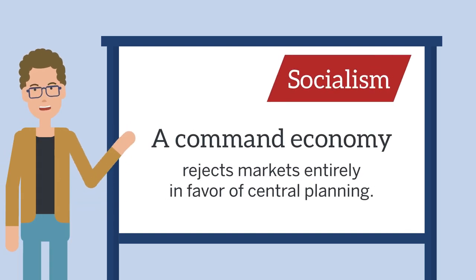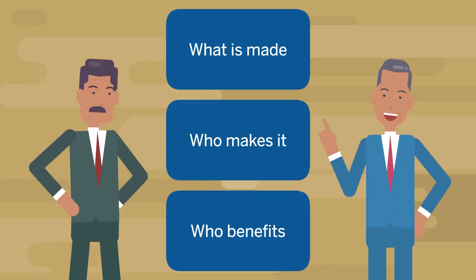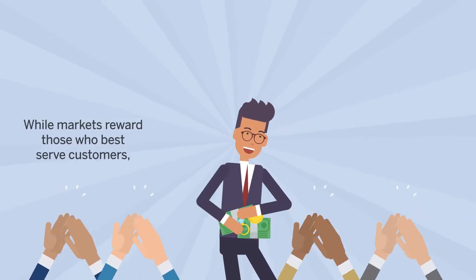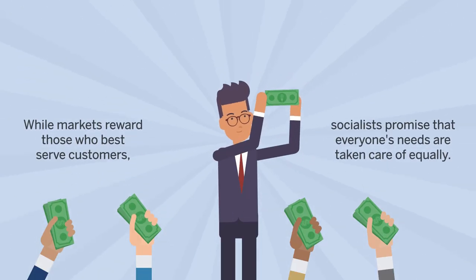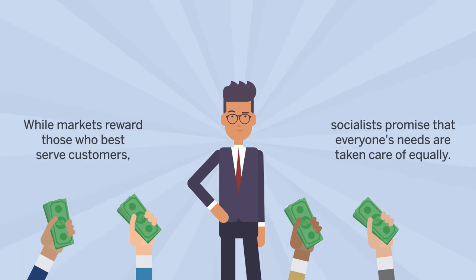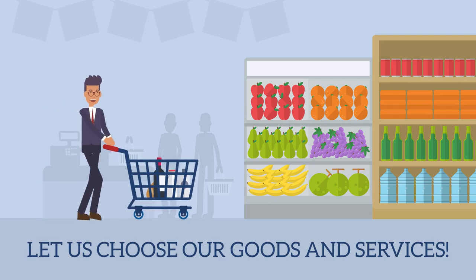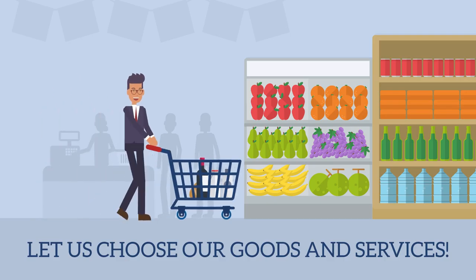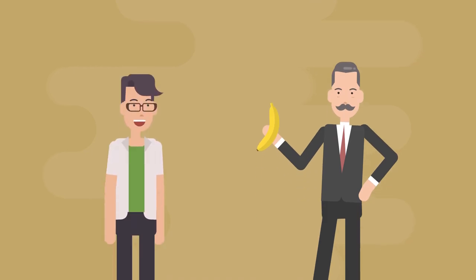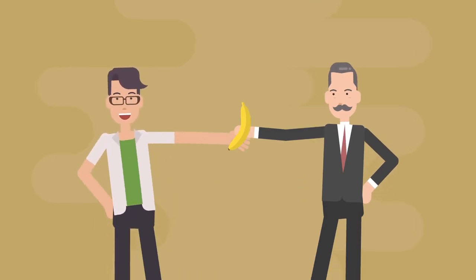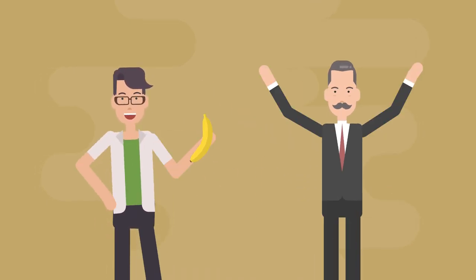This is socialism. Under socialism, central planners control what is made, who makes it, and who benefits. While markets reward those who best serve customers, socialists promise that everyone's needs are taken care of equally. Instead of individuals choosing what goods and services they prefer to spend their money on, they are provided only with what goods and services the central planners have chosen for them.